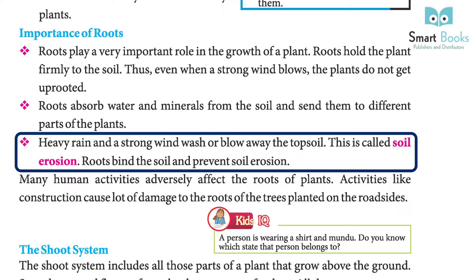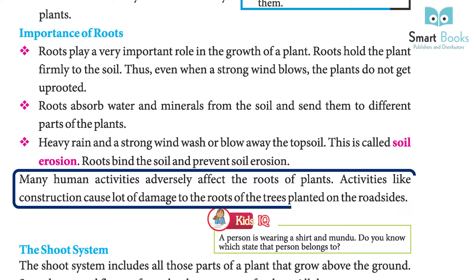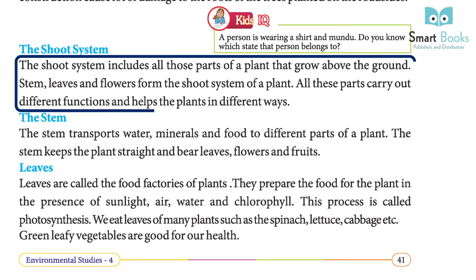Heavy rain and strong winds wash or blow away the top soil — this is called soil erosion. Roots bind the soil and prevent soil erosion. Many human activities adversely affect the roots of plants; activities like construction cause a lot of damage to the roots of trees planted on roadsides.